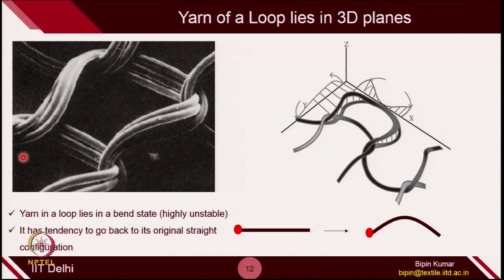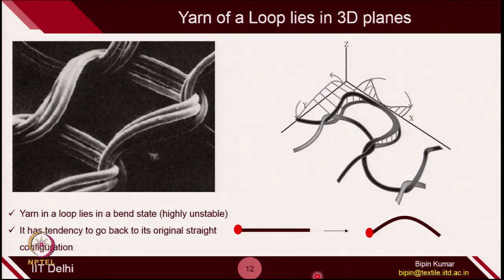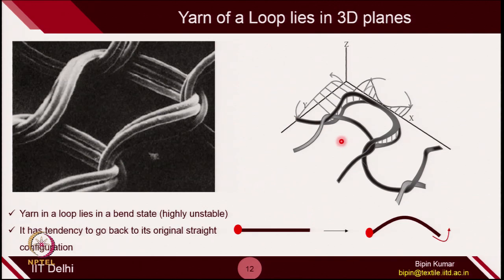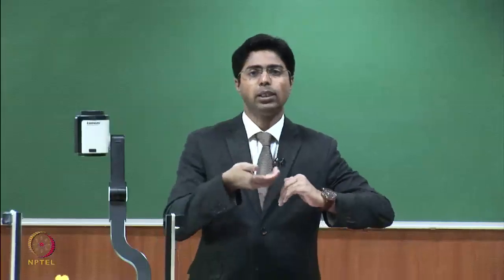You can understand this with a simple example: if you take any elastic rod and bend it from one side, the moment you release the force, it will always try to go back to its original straight configuration. So the nature of yarn is always to recover from the bending state. Inside a loop, in each plane, the yarn is in different bending states — sometimes bending in a concave order and sometimes in a convex order.